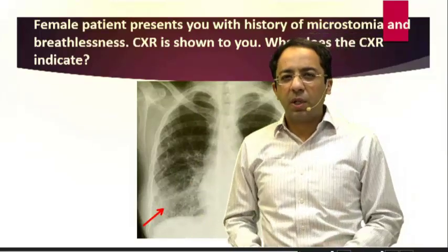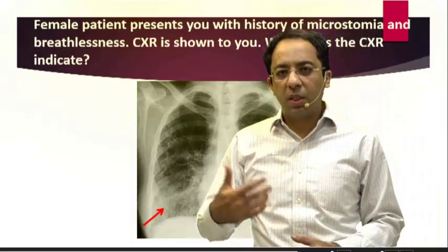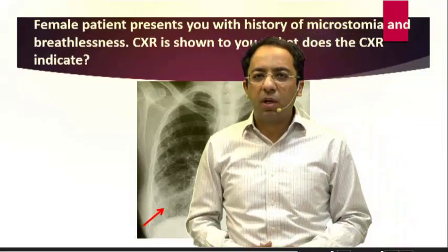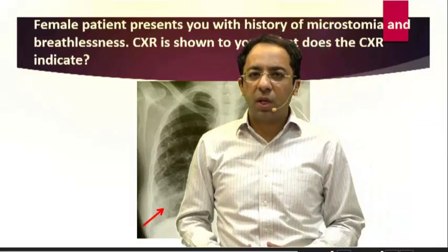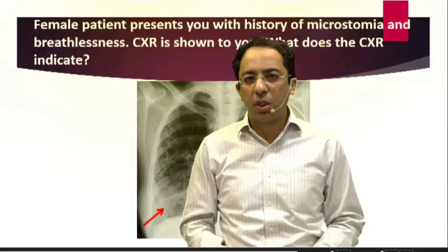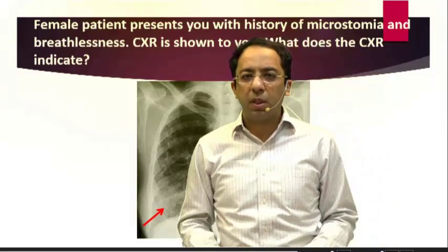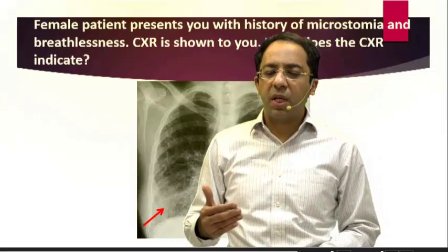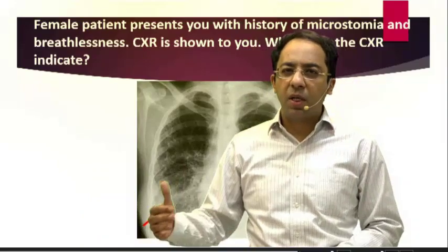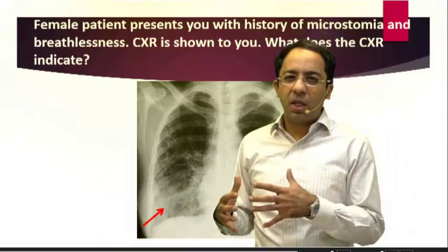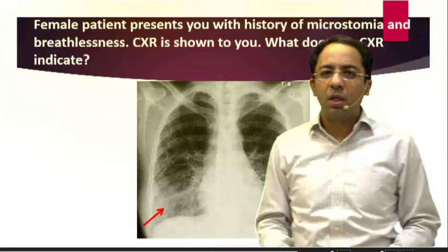Scleroderma typically leads to a UIP-like pattern on HRCT — high resolution CT of the lung. In HRCT, we characterize interstitial lung disease based on what we see. If we find basal honeycombing with subpleural involvement and traction bronchiectasis, we think of usual interstitial pneumonia, or UIP. UIP typically indicates a poor prognosis, and the imaging findings are similar to what you see in idiopathic pulmonary fibrosis or rheumatoid lung.